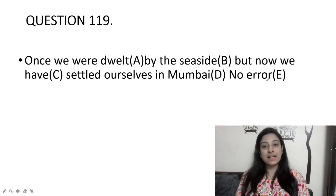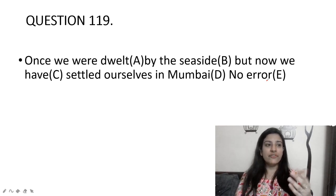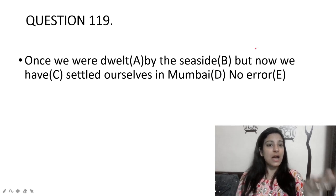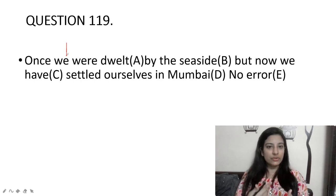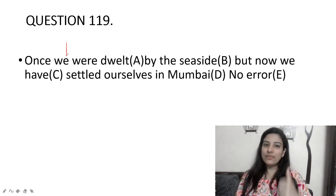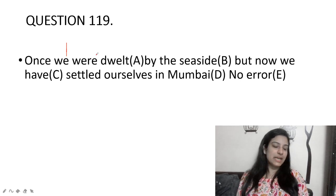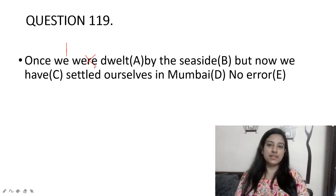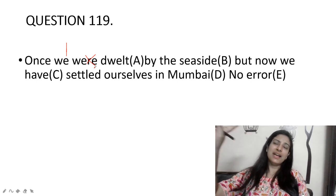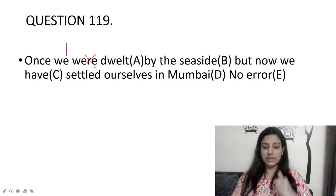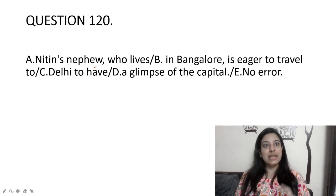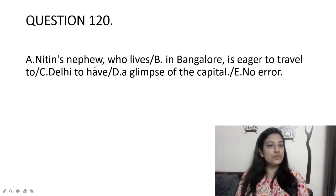Once we were dwelt by the seaside but now we have settled ourselves in Mumbai. The error is in option A. 'Were dwelt' implies passive voice, as if someone else made us live there. But 'dwell' means to live — we ourselves are doing the living, so it should be active voice. Remove 'were': it should be 'once we dwelt by the seaside.'